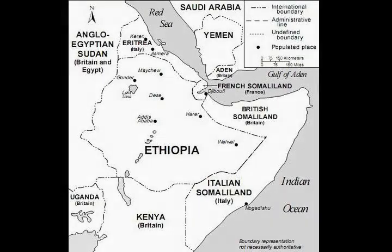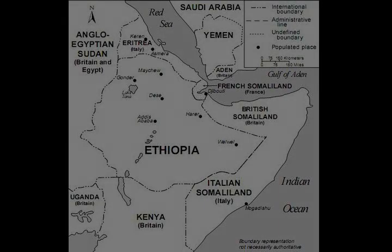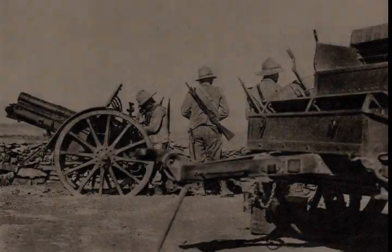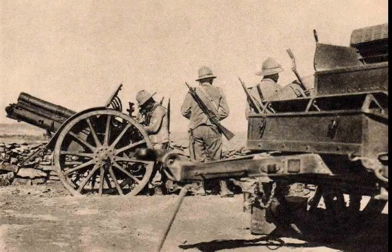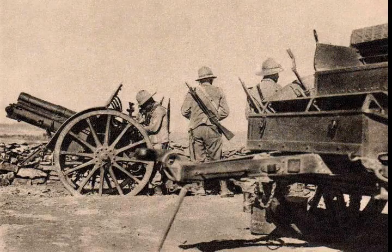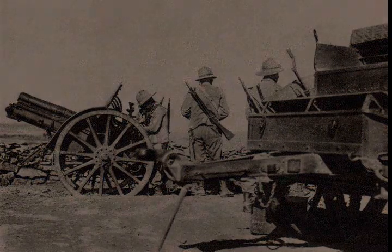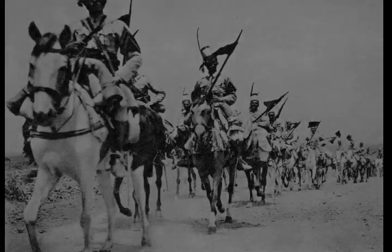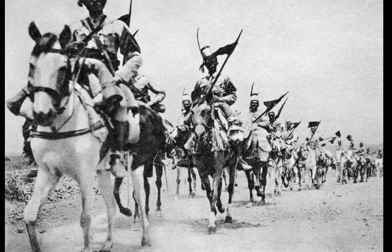The Italians advanced 145 miles in four days, bringing them almost within striking distance of Gigiga, Harar, and Ethiopia's only railway. But the forces available to Graziani remained limited, and by November the initiative on the southern front passed to the Ethiopians, as it did in the north.